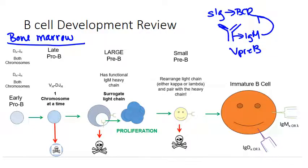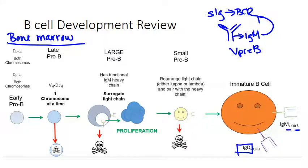At that point, it'll be expressed on the surface and the cell will proliferate. Once it's made its light chain, it has a full IgM on its surface that can be either kappa or lambda light chain. Then it will undergo alternative splicing to express the IgD heavy chain at the same time as IgM. This basically signals to the bone marrow that it's ready to leave and go out into the periphery to find its antigen of interest.